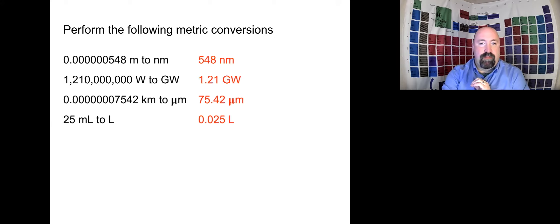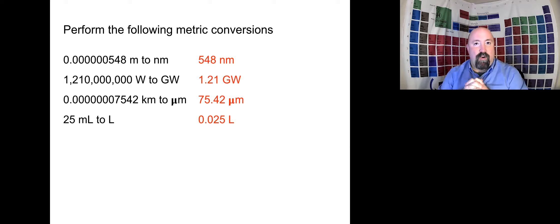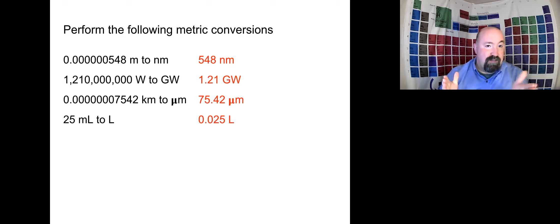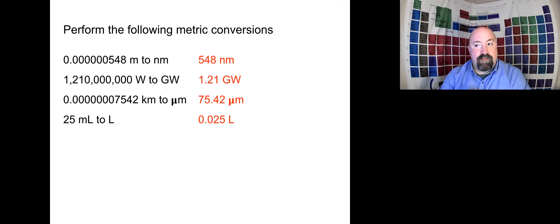Now let's take a look at the answers. We have 548 nanometers, 1.21 gigawatts — just enough electricity to power a DeLorean. If you got that reference, kudos to you. We have 75.42 micrometers and 0.025 liters. If you got those wrong, go back and look at your metric conversions — you may have moved the decimal point in the wrong direction or the wrong number of places. Always take a look at what you did wrong and try to correct for that.